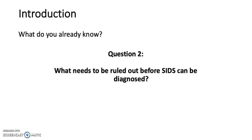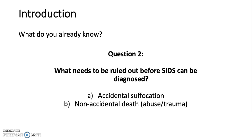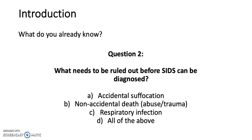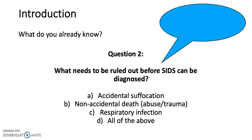Question 2: What needs to be ruled out before SIDS can be diagnosed? A. Accidental suffocation. B. Non-accidental death, such as abuse or trauma. C. Respiratory infection. Or D. All of the above. The answer is all of the above.